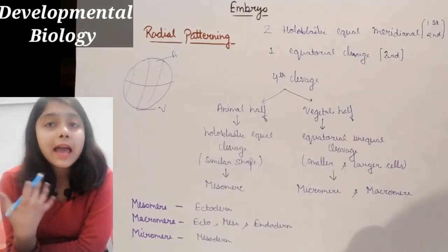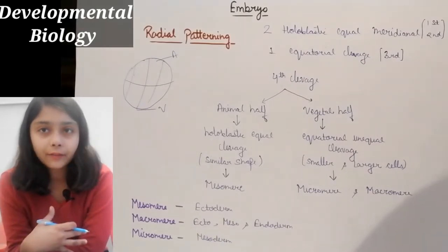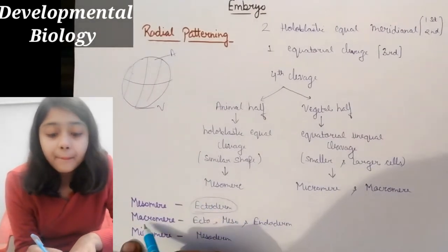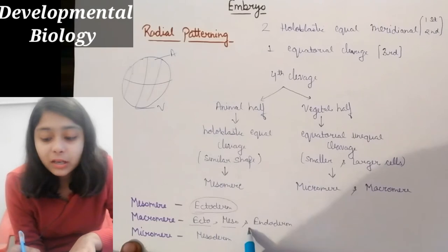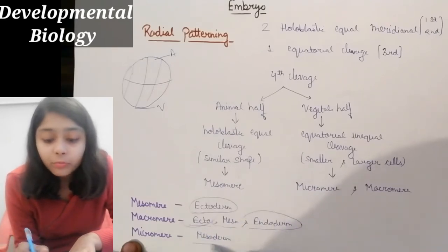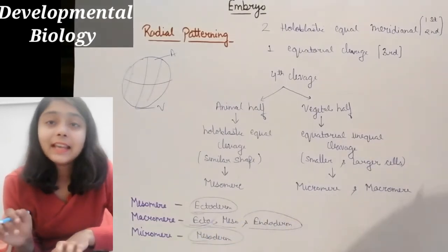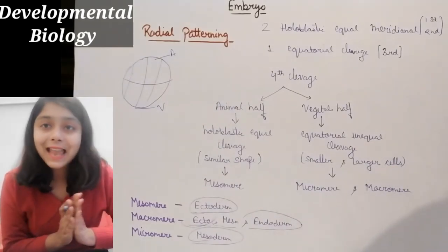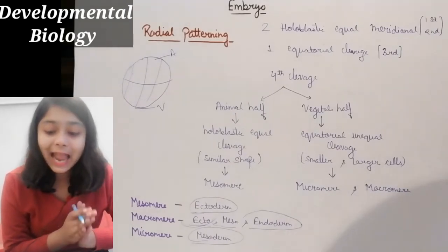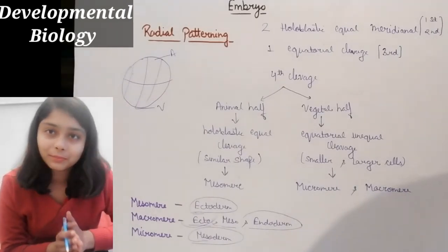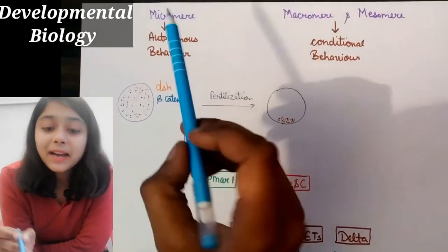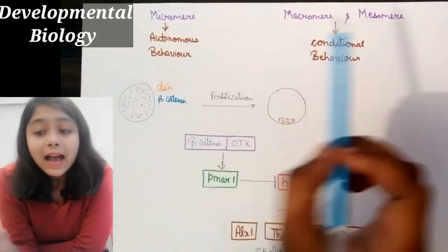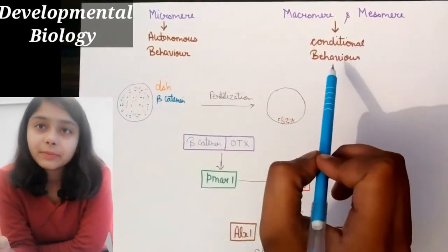Mesomere comes from the animal half and macromere comes from the vegetal half. Mesomere gives rise to the ectoderm, and micromere gives rise to the mesoderm. Micromere cells follow autonomous behavior, while macromere and mesomere cells follow conditional behavior.